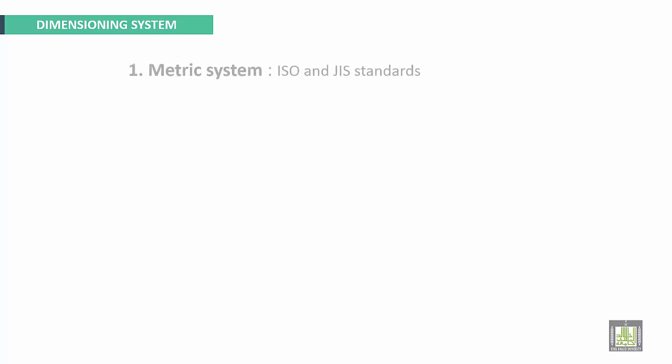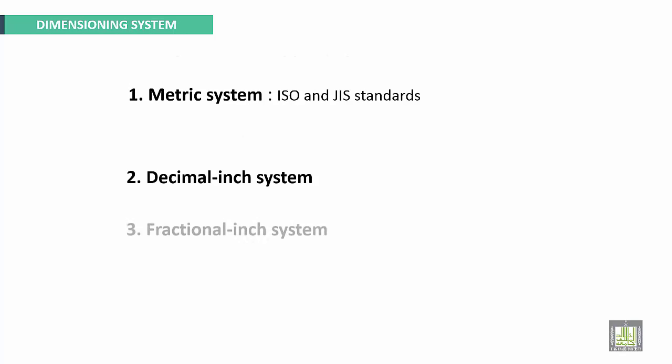Dimensioning systems: There are three dimensioning systems. The first one is called the metric system, used in ISO and JIS standards.